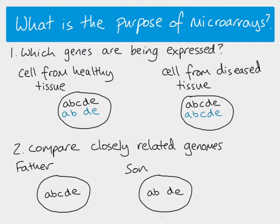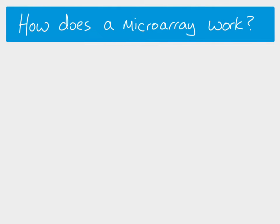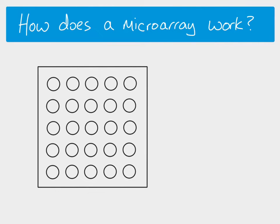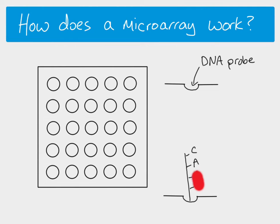A microarray is very small — it could fit onto a microscope slide. On the microarray are small wells, almost like little indentations. A DNA probe is attached into each well, which is a small section of single-stranded DNA. The DNA probe would have more nucleotide bases than a simple diagram suggests, but it would still be a small section — not an entire gene, just a section of a gene — and it would be unique to each well.